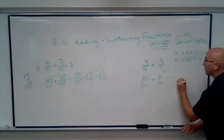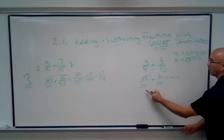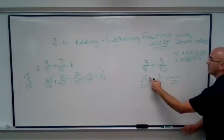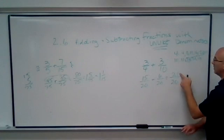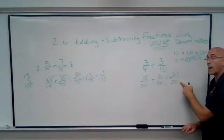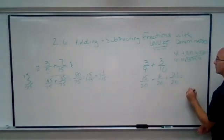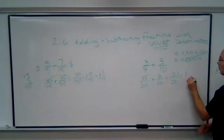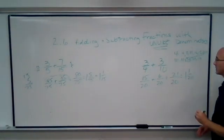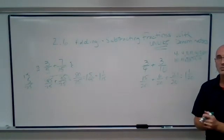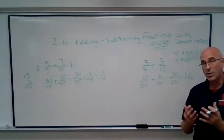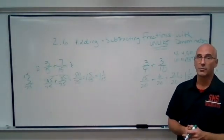Now that becomes a nice problem. 20 in the denominator. 15 plus 6 is 21. 21/20 is an improper fraction, so we will convert that to a mixed number, 1 and 1/20. Here's how to add or subtract fractions with different denominators.